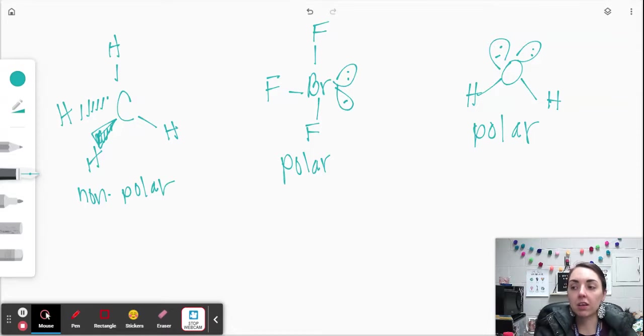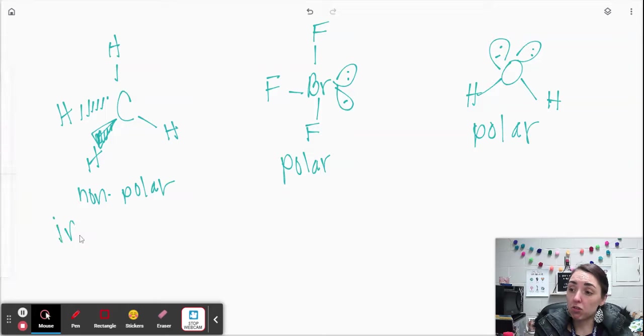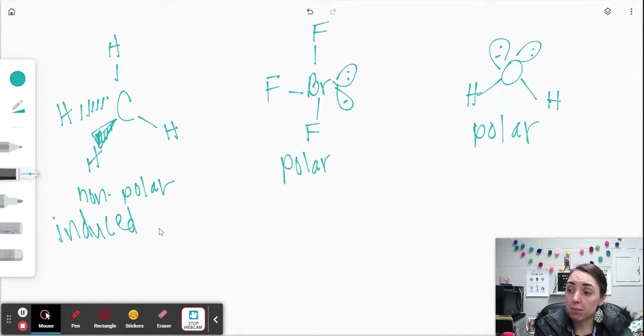So in a nonpolar molecule like this, overall it doesn't have a positive side or a negative side because everything kind of cancels each other out. But these bonds aren't fully equally distributed as far as the electrons go, so the electrons kind of slosh around in these bonds. They'll be more to one side than the other, meaning we can have what's called a temporary dipole or an induced dipole. So when we have an induced dipole attracted to another induced dipole, that gives us what we call an induced dipole-dipole attraction.